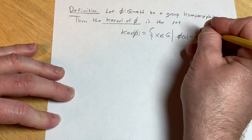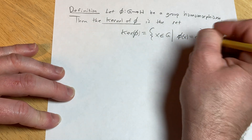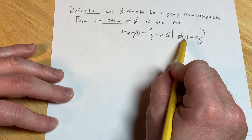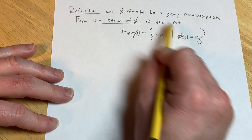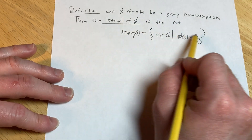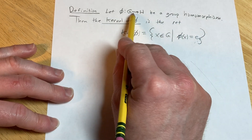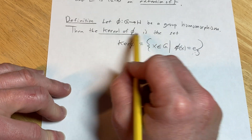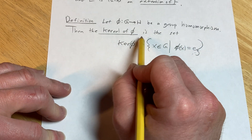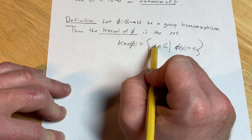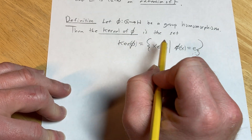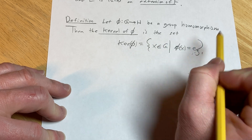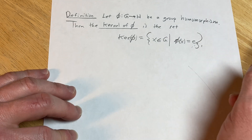Now here this identity element is in H, and this element x is in G, so these are different groups, or they could be different groups. This is called the kernel of phi, or the kernel of a group homomorphism, and that is the definition.